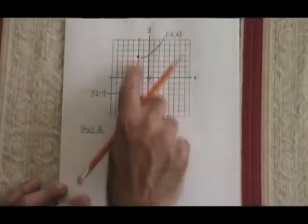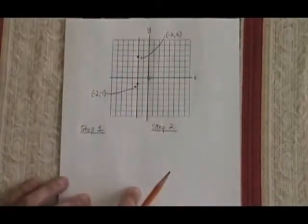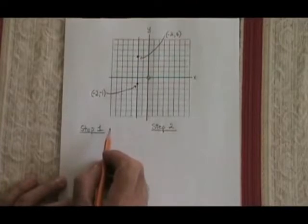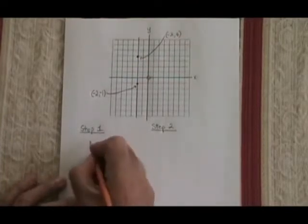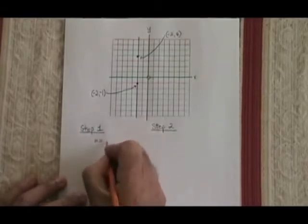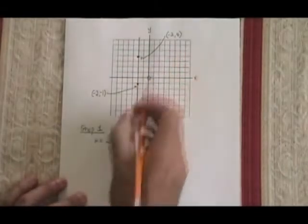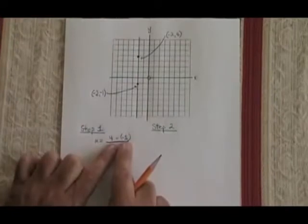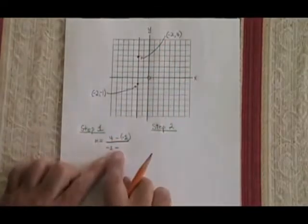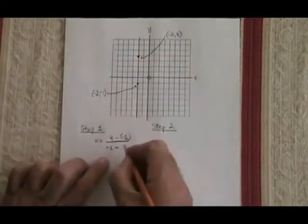What if we are given a vertical line and asked to find the equation? We can still use the same process. Step 1 is find the slope. So using the slope formula, I have m equals y2 is 4 minus y1, which is negative 1, over x2, which is negative 2, minus x1, which is also negative 2.